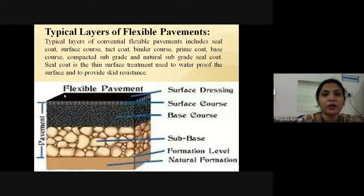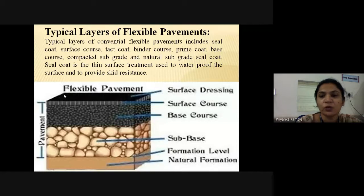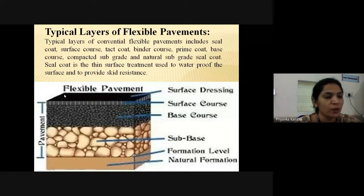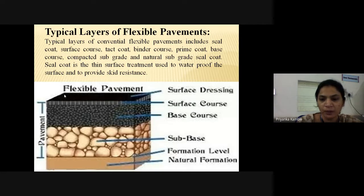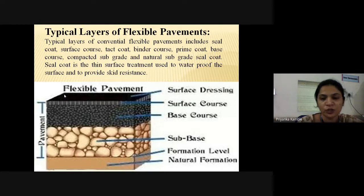The typical layers of flexible pavement include, from bottom to top: natural formation, formation level, sub-base course, base course, surface course, and surface dressing. In the cross-section of flexible pavement, the top layer is surface dressing, then surface course, then base course, then sub-base, sandwiched between the formation level and natural formation, which is not disturbed.